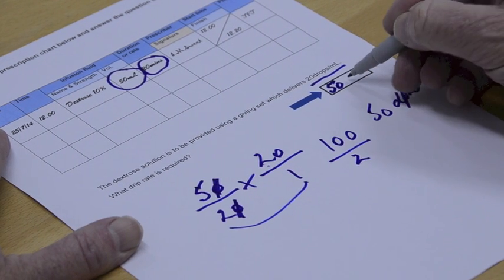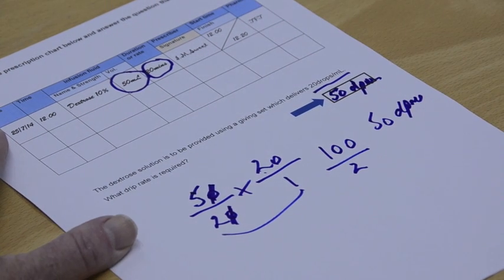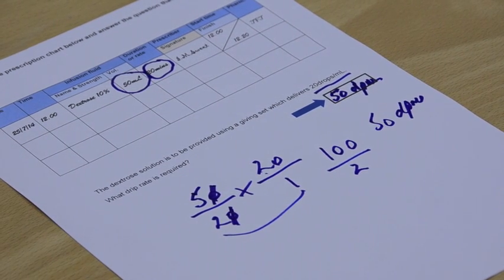Putting in the answer: 50. Don't forget the units—drops per minute. Quite easily done, as they say.